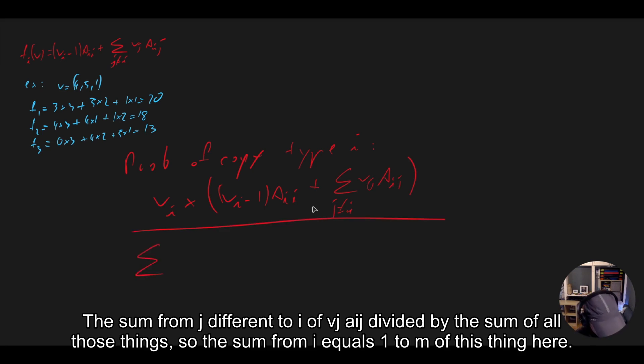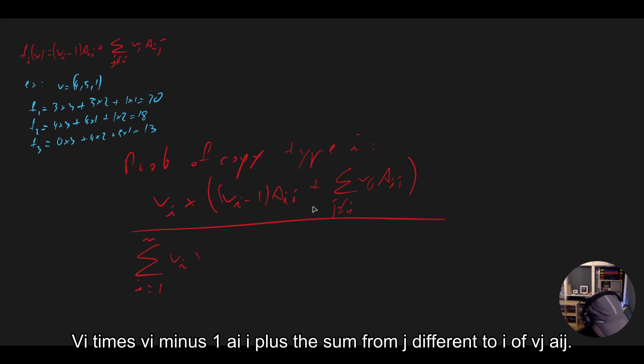So the sum from i equals 1 to m of this thing here, vi times vi minus 1 aii plus the sum from j different to i of vj aij.